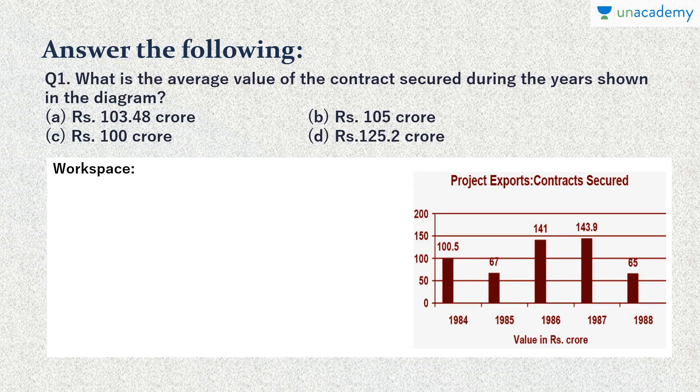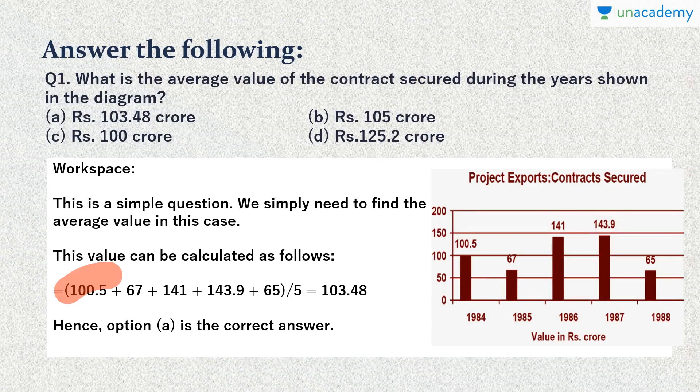What is the average value of the contract secured during the years shown in the diagram? We need to find out the average values for all the years shown in the diagram, 1984 to 1988. To find the average, we have to add up all these values and divide it by the number of years, that is 5 years. So here it is: we add up 100.5 plus 67 plus 141 plus 143.9 plus 65 and divide this total value by 5 to get our average answer, that is 103.48 crores. So our correct option is option A.